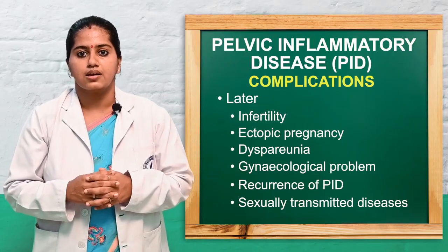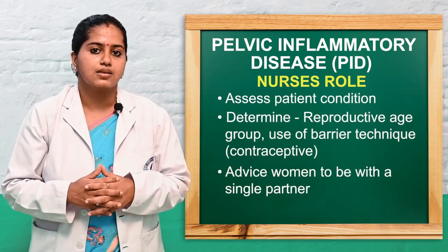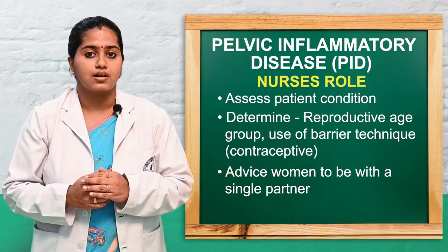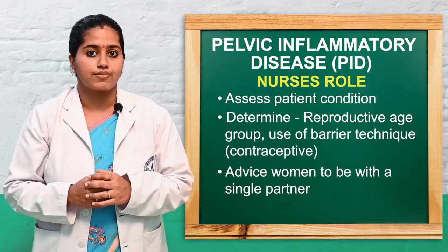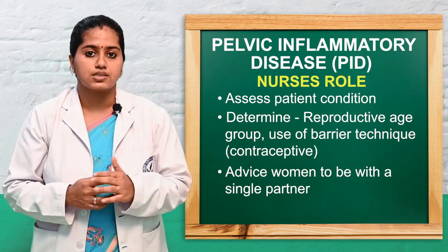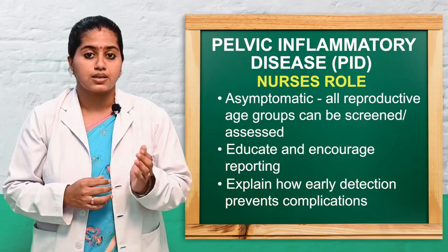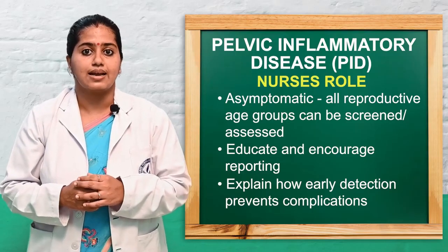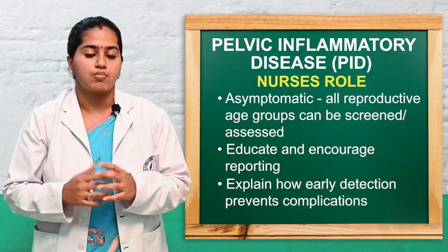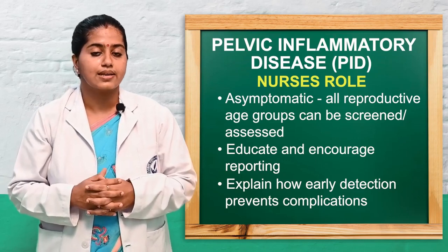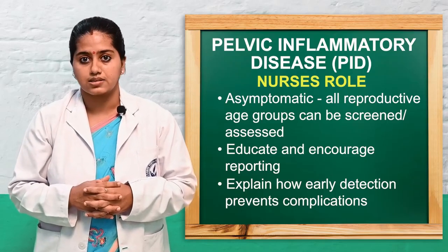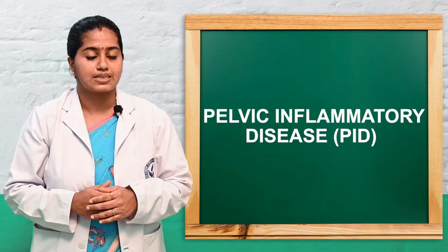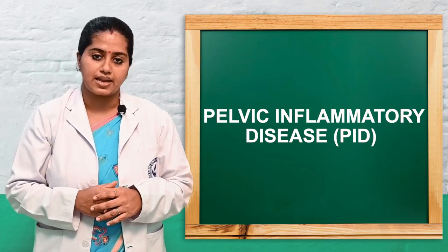As a nurse taking care of pelvic inflammatory diseases, we should generally assess all women of reproductive age, promote use of barrier contraceptive measures, and advise women to have single partners. Since the condition may be asymptomatic, all reproductive-age women should be assessed through screening measures for early detection of PID. Mass education, reporting of cases, early identification, and treatment will give better results in reducing future complications.